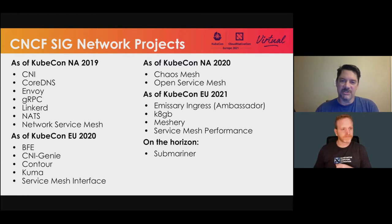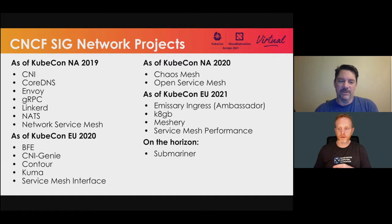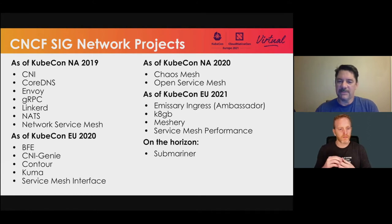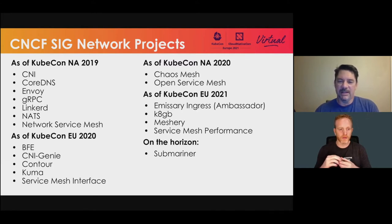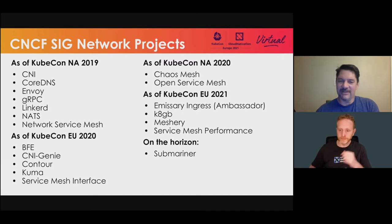Our friends at Cisco brought in some network service mesh discussions. That helped kick us off at KubeCon Europe 2020 with additional projects like GNI, G&E, Contour, and the service mesh interface. We ended the year working with Chaos Mesh and Open Service Mesh. Today we're excited to be looking at the Ambassador/Emissary Ingress project, KGB, Meshery, and service mesh performance. On the horizon, Submariner is the main thing we're looking at.